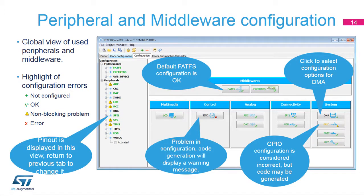The Configuration tab of the main window provides an overview of all the configurable hardware and software components that STM32CubeMX can help set up. Each button with access to configuration options is displayed with a small icon indicating the configuration state. The default state is not configured. Clicking on a button for a peripheral or middleware displays its configuration options. Even when configured correctly, further modifications are possible. Warning signs provide notifications about incorrect configurations, and the peripheral will not work if code is generated in this state. Critical errors are represented by a red X, and the configuration must be modified to continue.